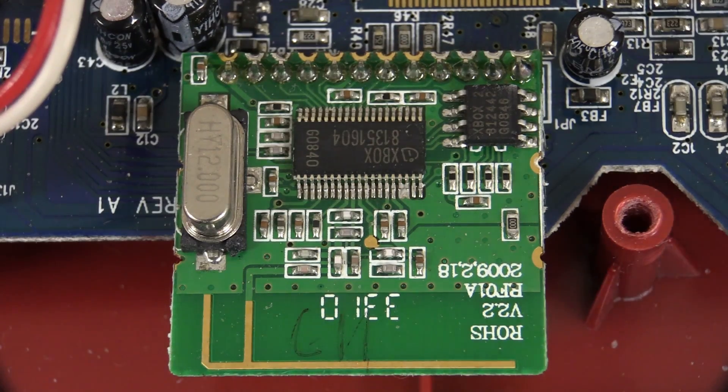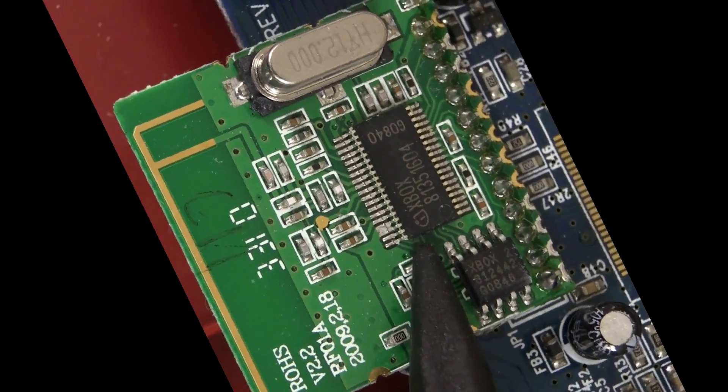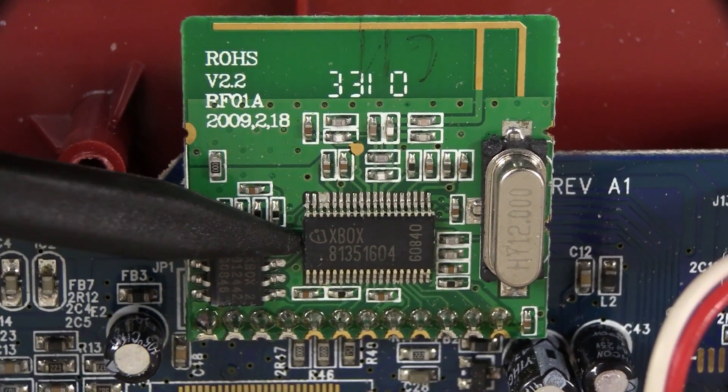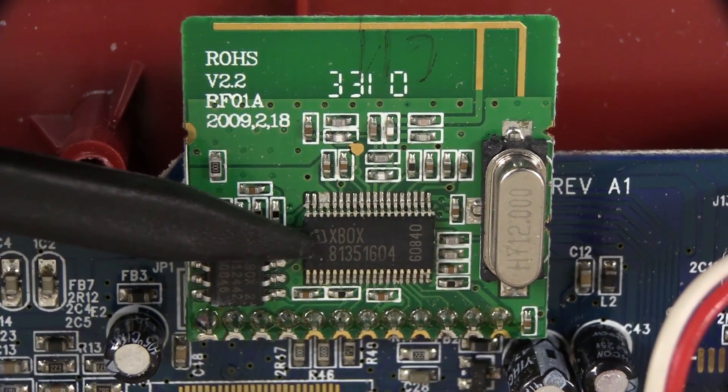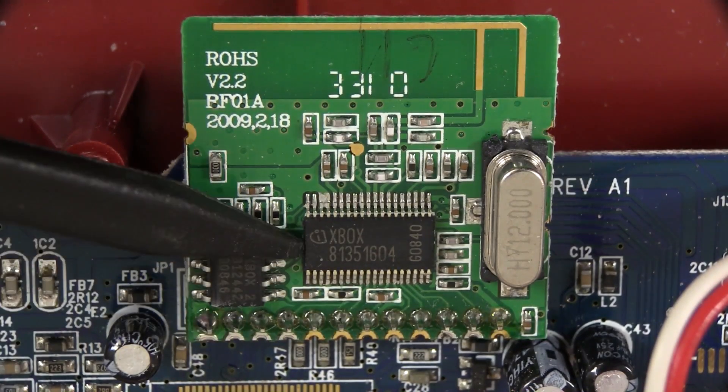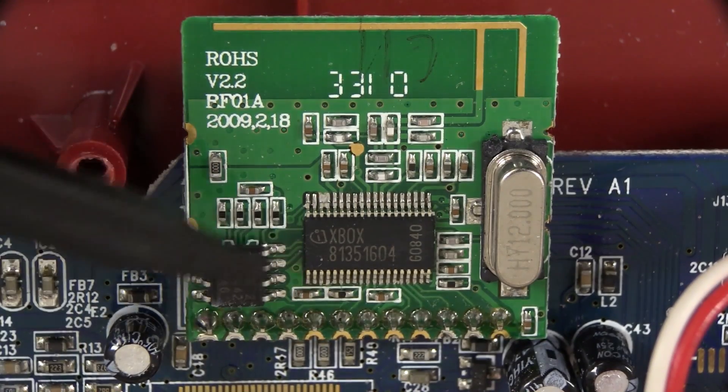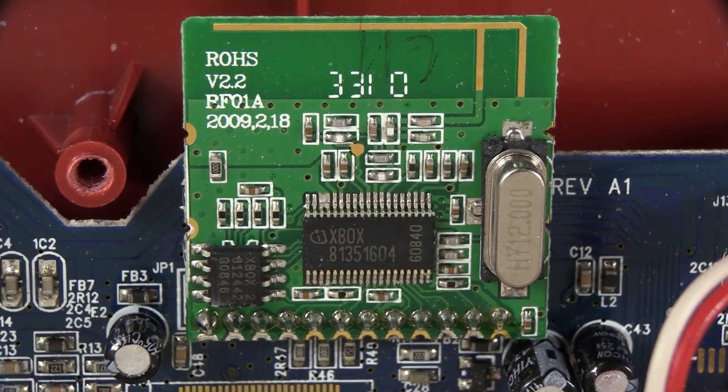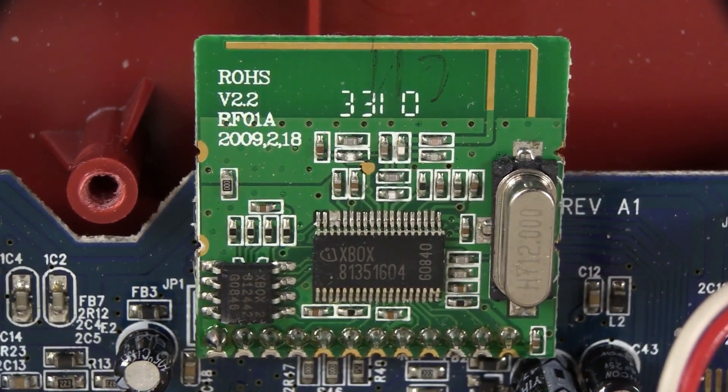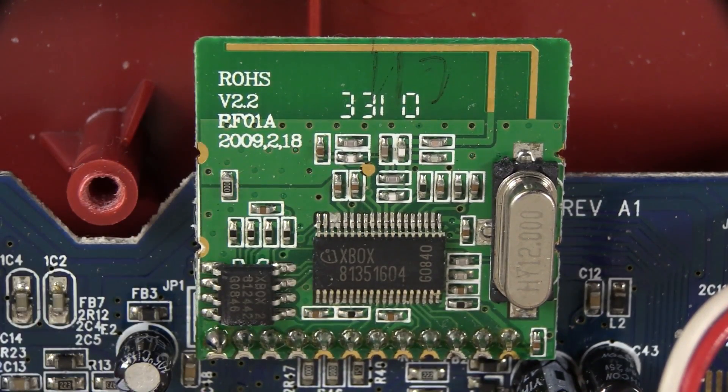Sorry it's upside down, I know all the electrons will fall out, but I couldn't get my camera over otherwise. No surprises for guessing that we've got an Xbox custom-branded chip here. Obviously they don't spin their own silicon, they're subcontracted out, but yeah, they're using their own proprietary 2.4 gig controller there. So, not Wi-Fi, not Bluetooth, it's Xbox-y.